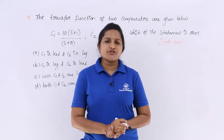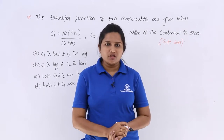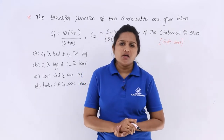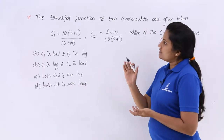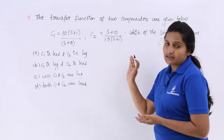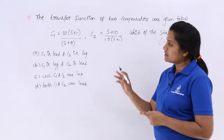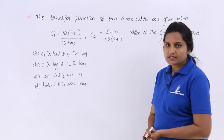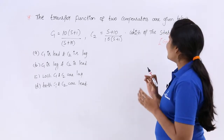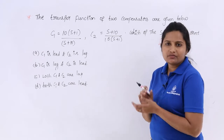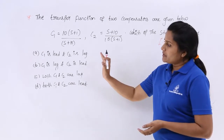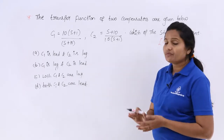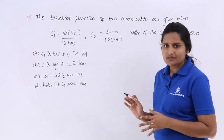In this video we are going to solve a very important model GATE problem related to compensators. Here they have given the transfer function of two compensators. By observing the transfer functions of the given compensators, we need to identify which compensator is which type — that is the question we need to ensure here.